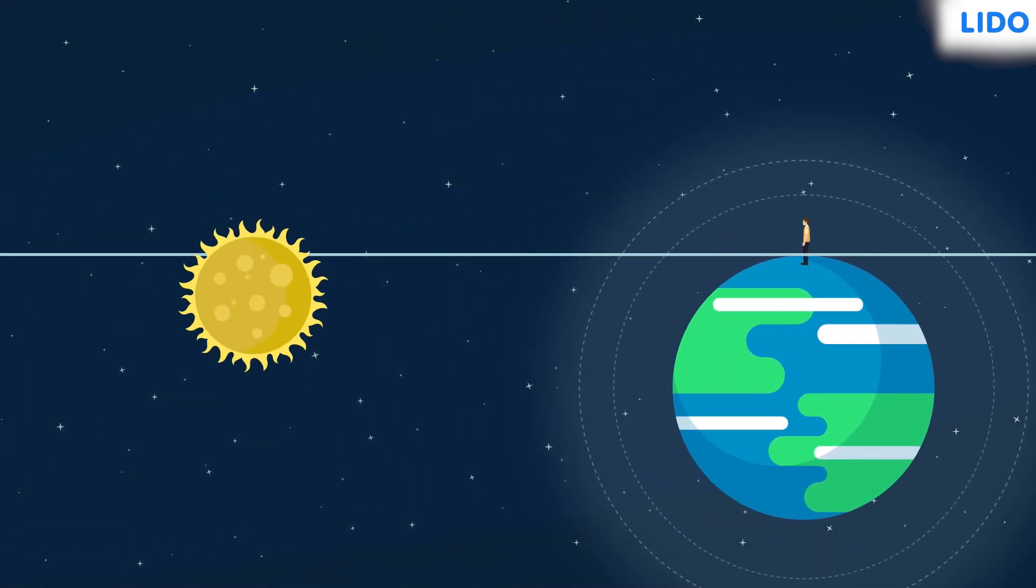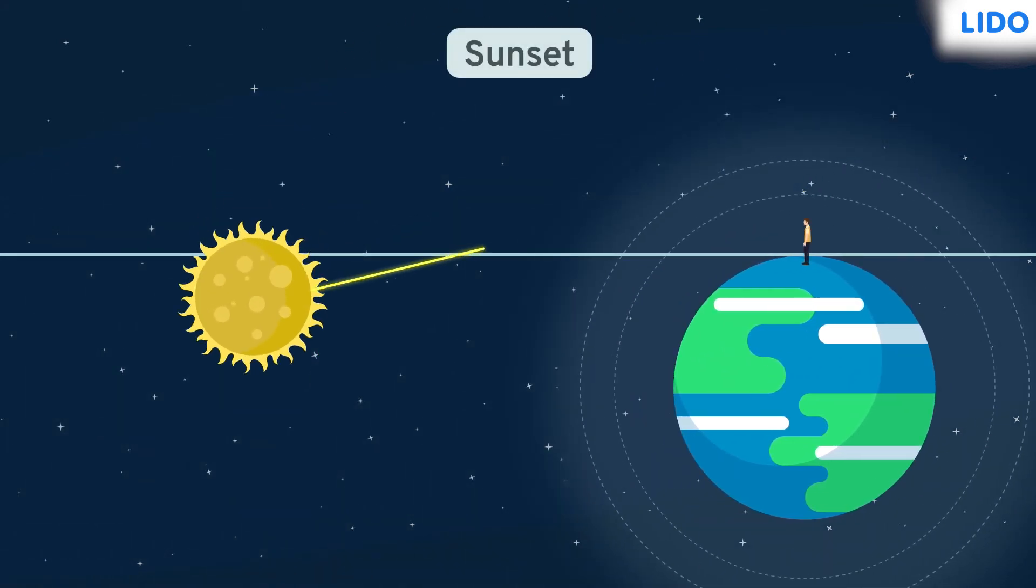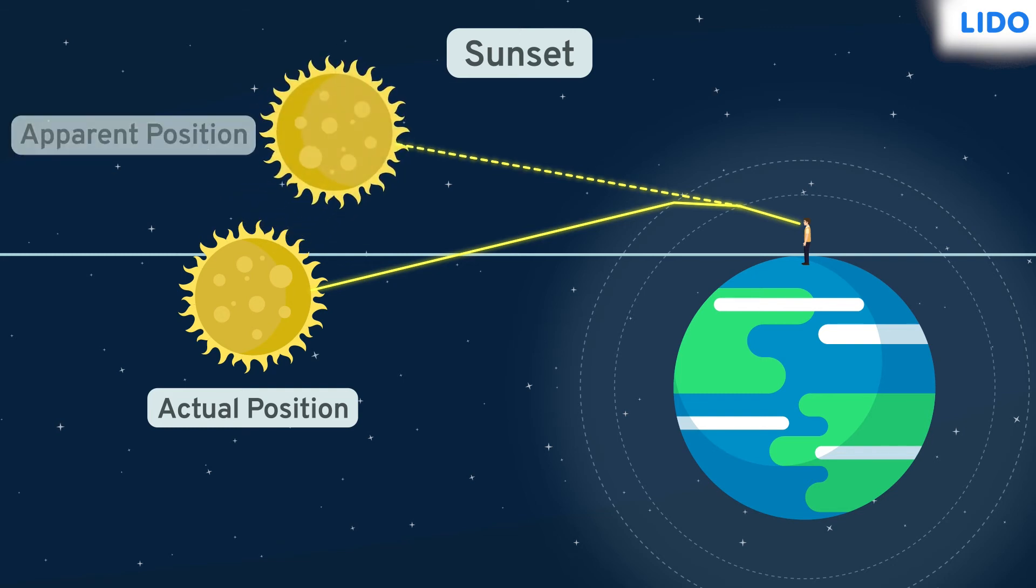Something similar happens during the sunset. The rays of light bend at the atmosphere and if the rays are back traced, the sun appears to be present above the horizon even after it has set.